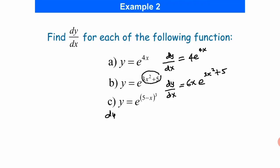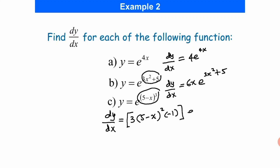For question C, our dy/dx is: we have to differentiate the power, so differentiating the power we are going to get 3 times (5 minus x squared), and then differentiate inside the bracket we get negative 1, and then we just copy back the question. So the answer will be negative 3·(5 minus x squared)·e to the power of (5 minus x) cubed.